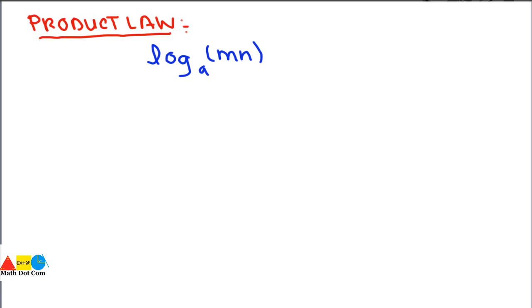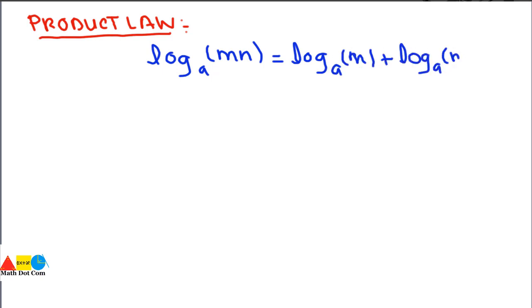The mathematical statement of the product law is: log base a of (m × n). Since m and n are multiplying, we call it the product law, and it can be written as log base a of m plus log base a of n. We have to prove that its left hand side equals the right hand side.